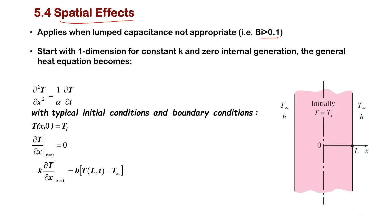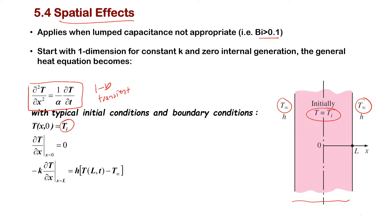In this case, we are interested in the analysis of a rectangular slab which has symmetric boundary conditions from left and right. The governing equation is the 1D transient heat diffusion equation. The initial temperature is Ti everywhere. At the middle we have symmetry, and at the interface the convective flux is equal to the conductive heat flux.